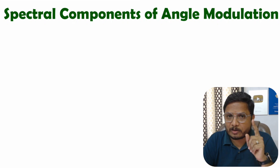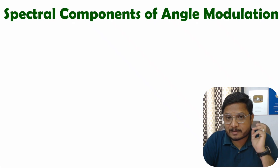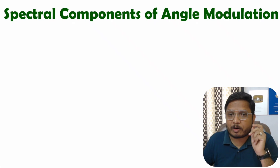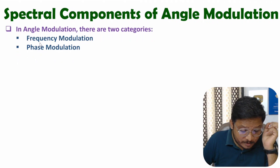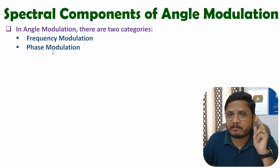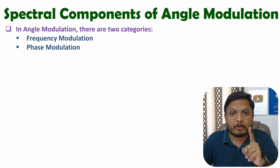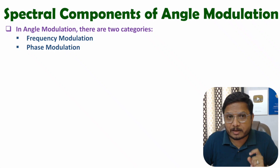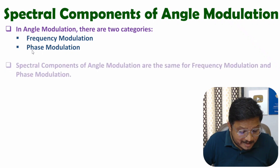In angle modulation, the angle of the carrier signal changes with respect to the message signal. In angle modulation, we have two categories: the first category is frequency modulation and the second category is phase modulation. I have already made videos on frequency and phase modulation in this lecture series. The spectral components of frequency and phase modulation are identical.